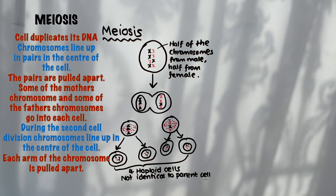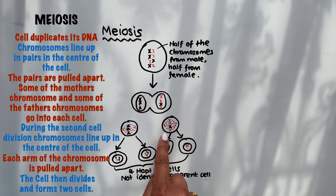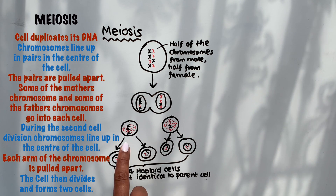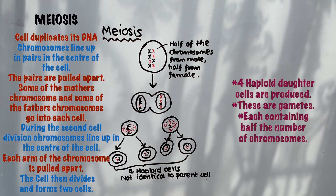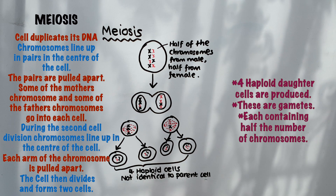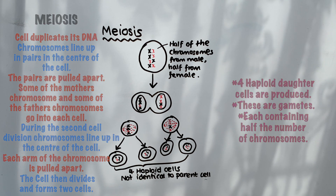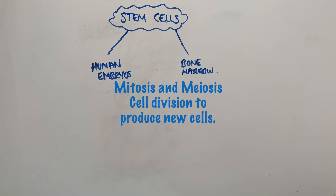In the second cell division, each arm of the chromosome is pulled to either end of the cell. The nuclei then form, the cytoplasm splits by cytokinesis — the same as in mitosis — and we end up with four cells, each with half the genetic information. All four of these are gametes, and they are not identical to their parent cell.